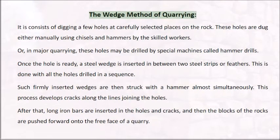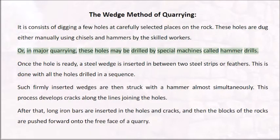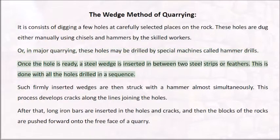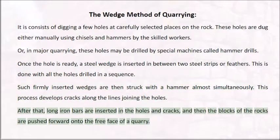The Wedge Method of Quarrying consists of digging a few holes at carefully selected places on the rock, either manually using chisels and hammers or by machine hammer drills. Once the hole is ready, a steel wedge is inserted between two steel strips or feathers. Such firmly inserted wedges are then struck with a hammer almost simultaneously, developing cracks along the lines joining the holes. After that, long iron bars are inserted in the holes and cracks, and blocks of rock are pushed forward onto the free face of the quarry.